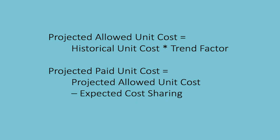Selecting a specific method for trending historical cost data could be a whole video series on its own, so we'll just assume that you've got a good trend factor. Some considerations in projecting a unit cost other than historical trends may be any known changes to the provider network or changes in healthcare practice that may impact the mix of services. The last step in projecting the unit cost for a PMPM is to subtract any enrollee cost sharing to move the allowed unit cost to a paid unit cost. Sometimes this can be as simple as subtracting a co-pay for each unit of service, although there are usually twists such as deductibles, out-of-pocket maximums, and other cost sharing elements.